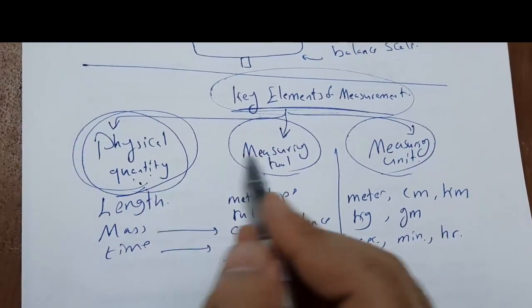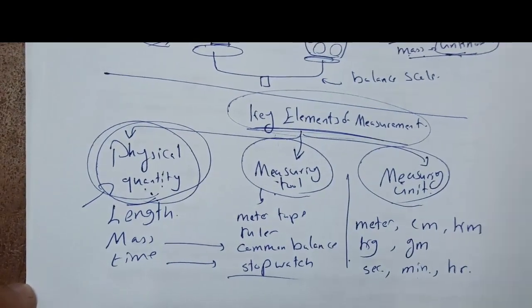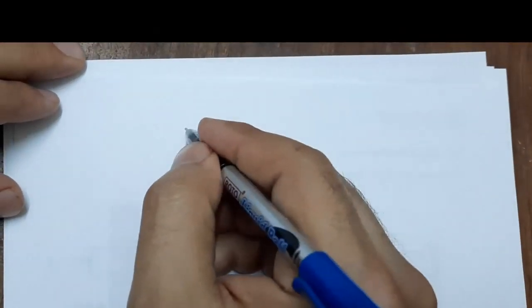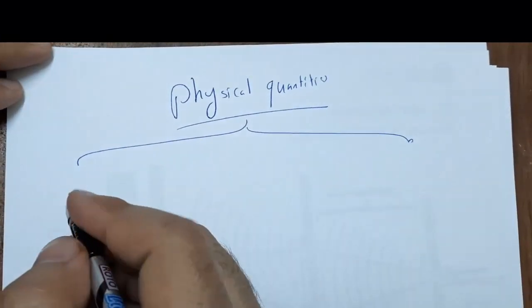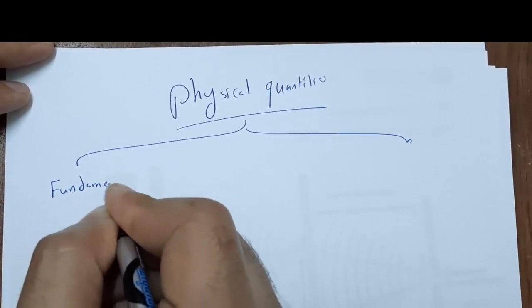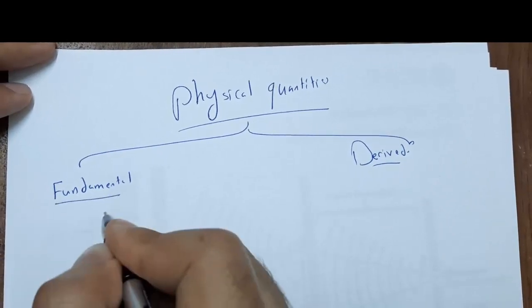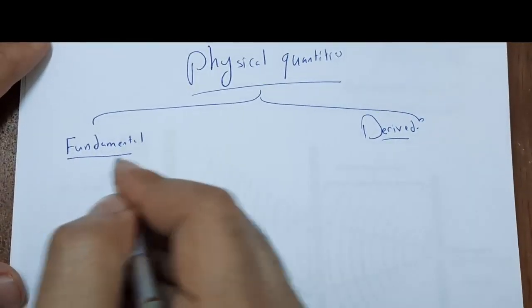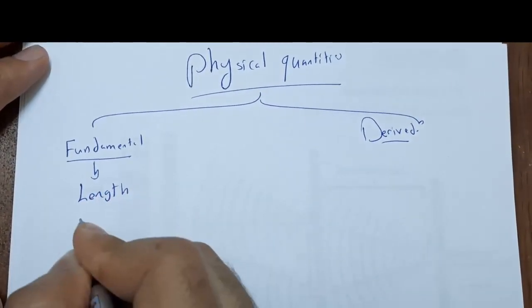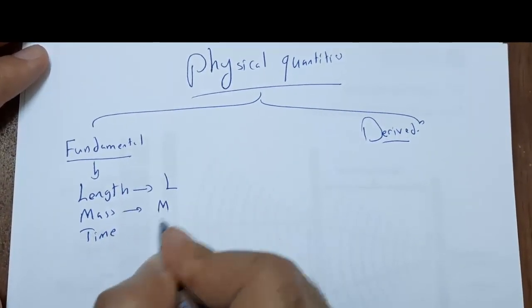Now let's talk about the types of physical quantities. There are two types: fundamental physical quantities and derived physical quantities. Fundamental quantities include length (L), mass (M), and time (T). They cannot be defined by another physical quantity — they are defined by themselves.